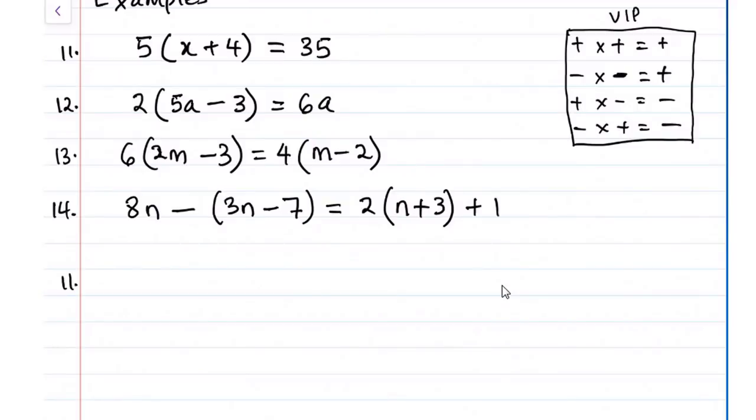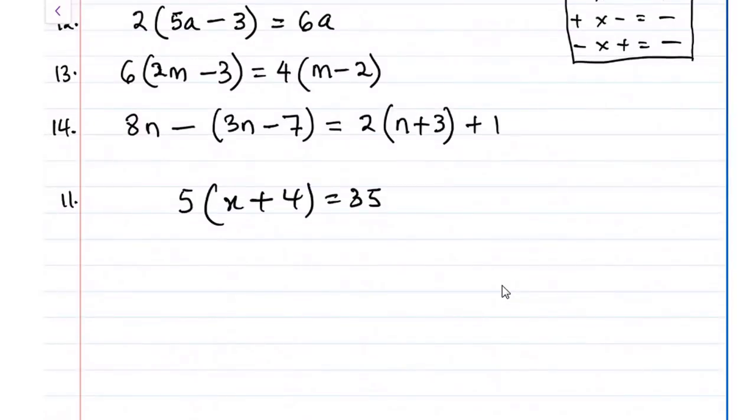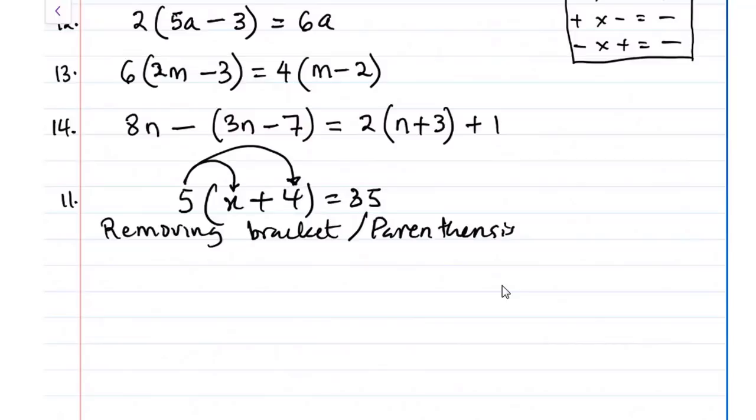So we start with question number 11. So we have 5 into x plus 4 equals to 35. So how do we approach it? The first thing that we're going to do here is we're going to say removing brackets. So how do we do that? This 5 we multiply x and then this 5 we also multiply 4. So that will give us something like 5x because 5 times x is 5x and 5 times 4 is 20 equals to 35.